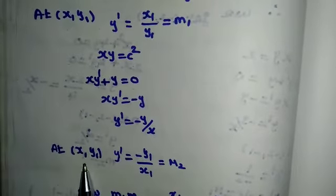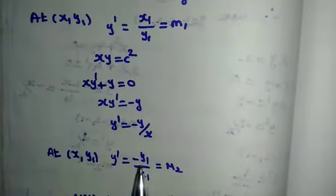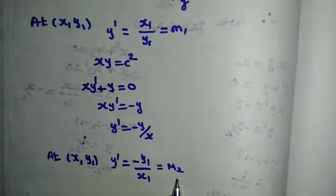Next, at x1 comma y1, y dash is equal to minus y1 by x1. It is equal to m2.